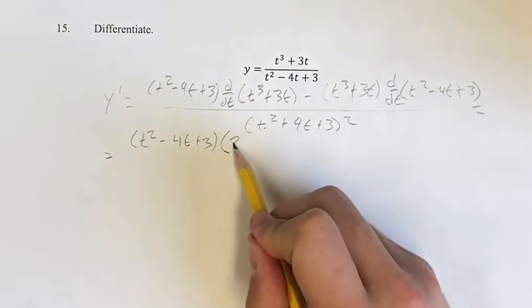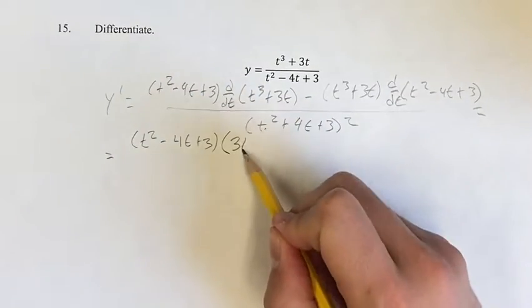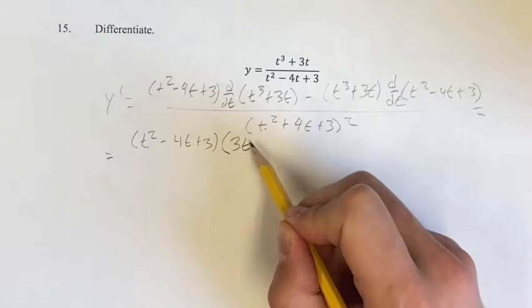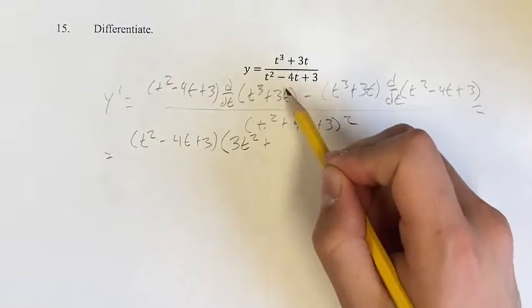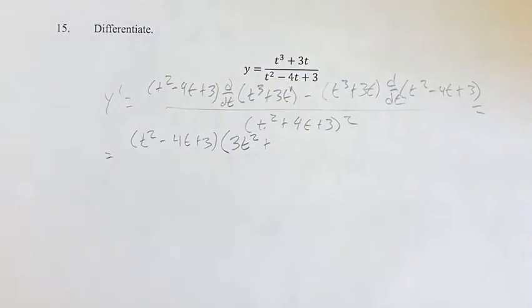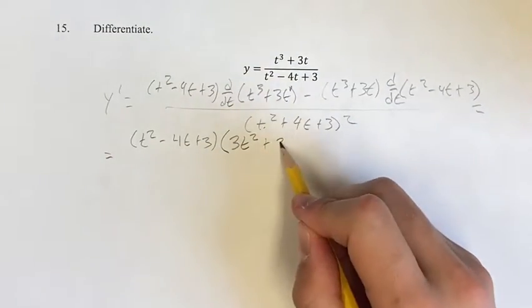So you bring down the exponent into the coefficient times t, and then your new power is the old one minus 1, so that's going to be 2. Plus, then we have a linear term here where t is to the first power, so its derivative is just going to be its coefficient, which is 3.